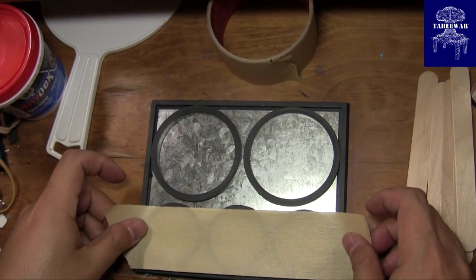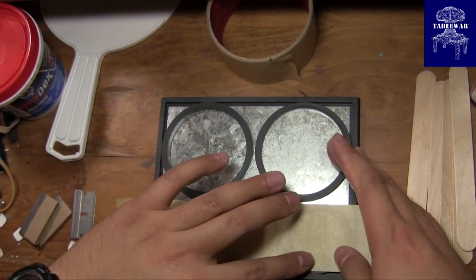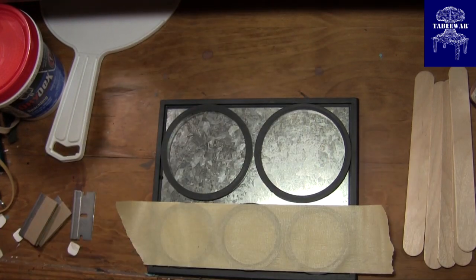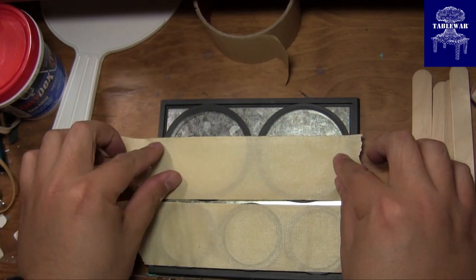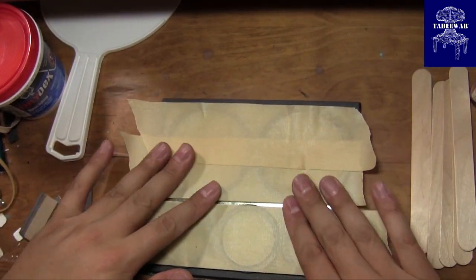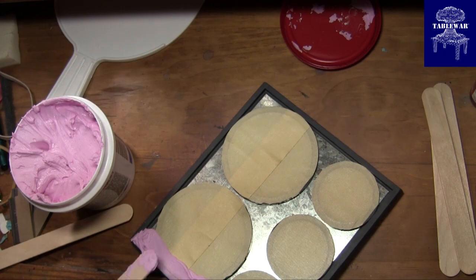Once the glue is dry, take masking tape and mask off the rings, then take a razor and cut around the outside of the rings. Then use craft sticks to apply drywall compound to the gaps.